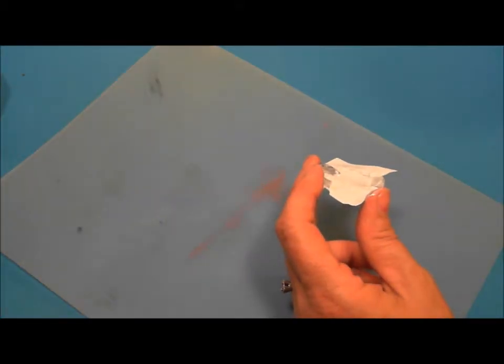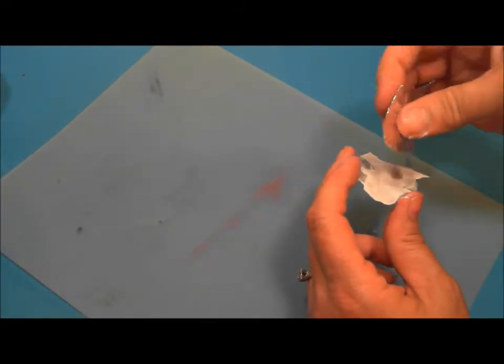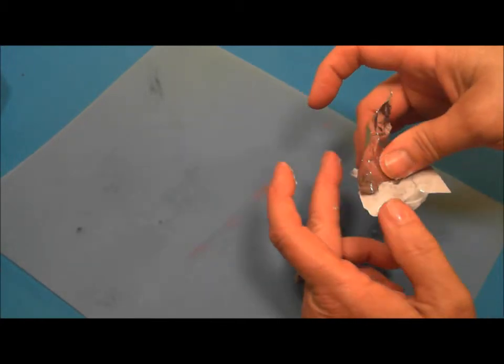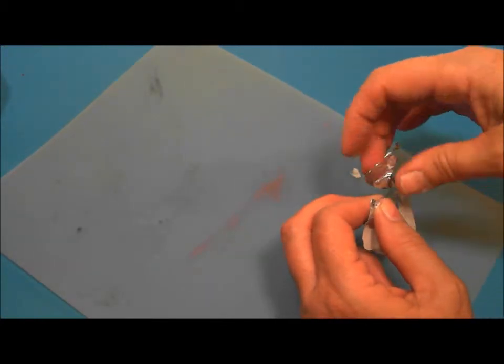While I have the piece still wet that's the time to add my foil. So I'll go to the edge here and put some foil on. I'm gonna let it all hang over until it dries and then I'll remove it.